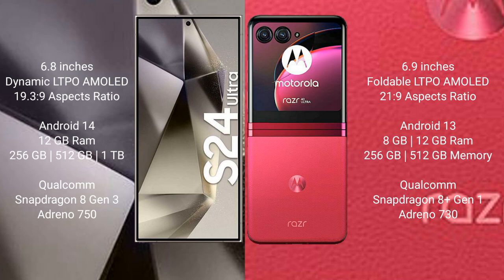Samsung Galaxy S24 Ultra comes with 12GB RAM and 256GB, 512GB, 1TB internal storage, Qualcomm Snapdragon 8 Gen 3 processor, and GPU Adreno 750. Motorola Razr 40 Ultra comes with 8GB or 12GB RAM and 256GB or 512GB internal storage, Qualcomm Snapdragon 8 Gen 1 processor, and GPU Adreno 730.